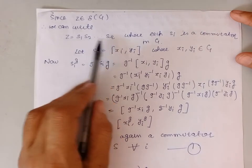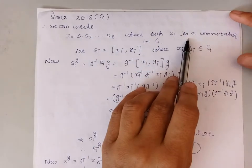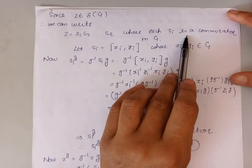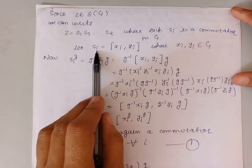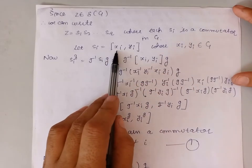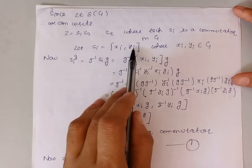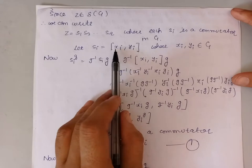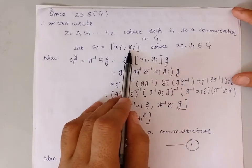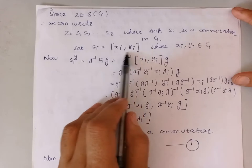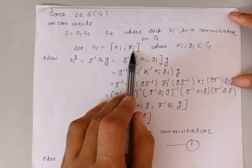Because each Si is a commutator in the group G, by definition of commutator, each Si can be written in the form [Xi, Yi]. Here, the elements Xi and Yi are elements of the group G, and [Xi, Yi] denotes the commutator of elements Xi and Yi.